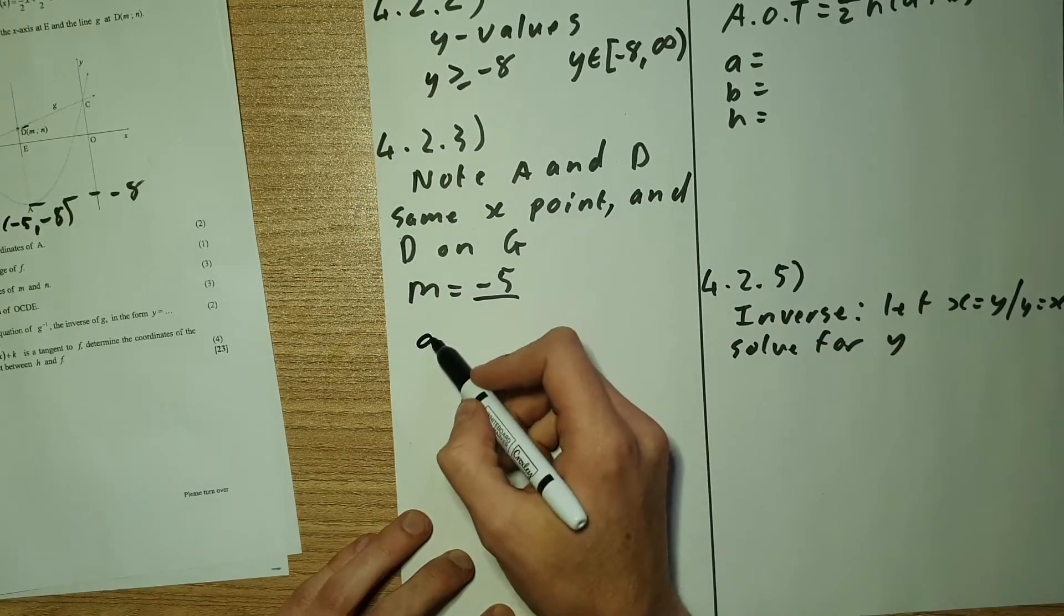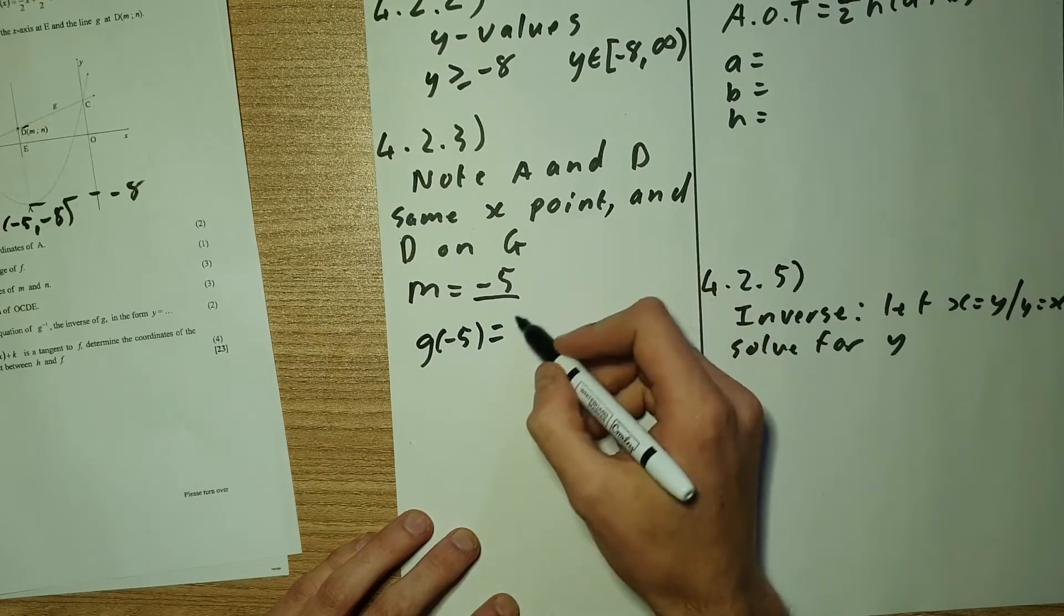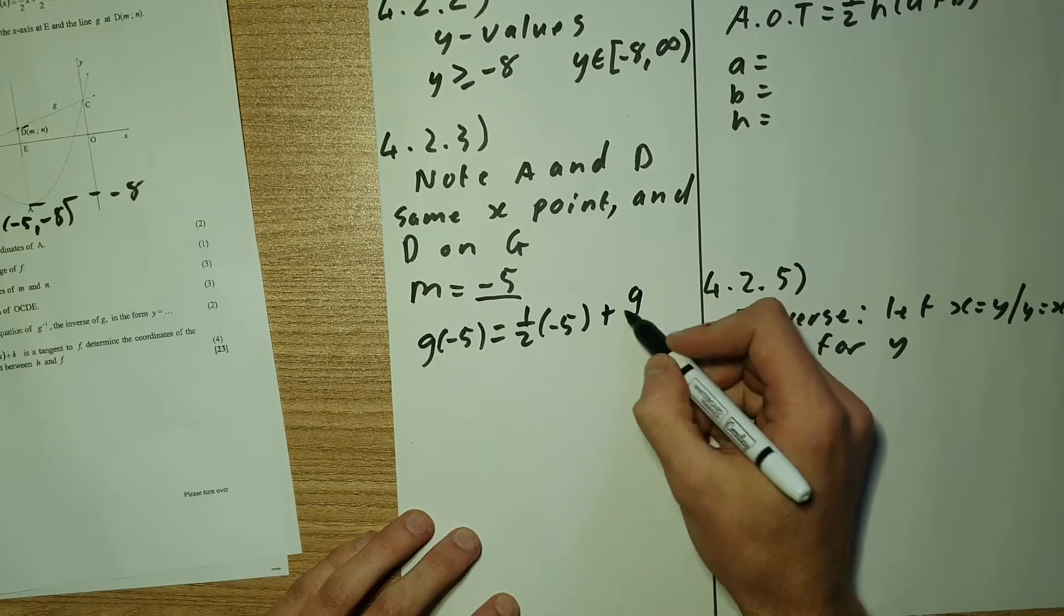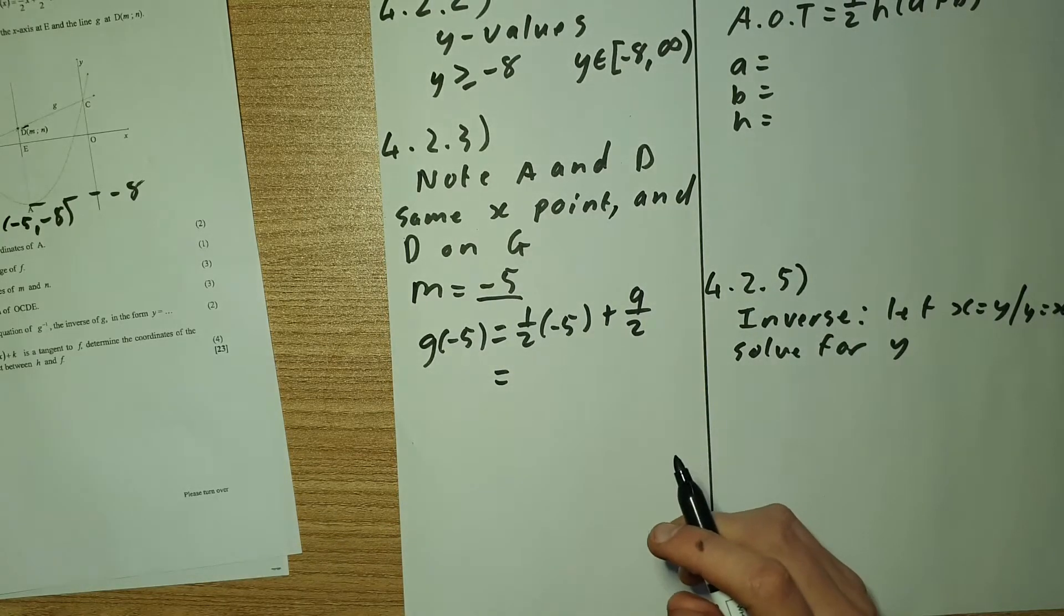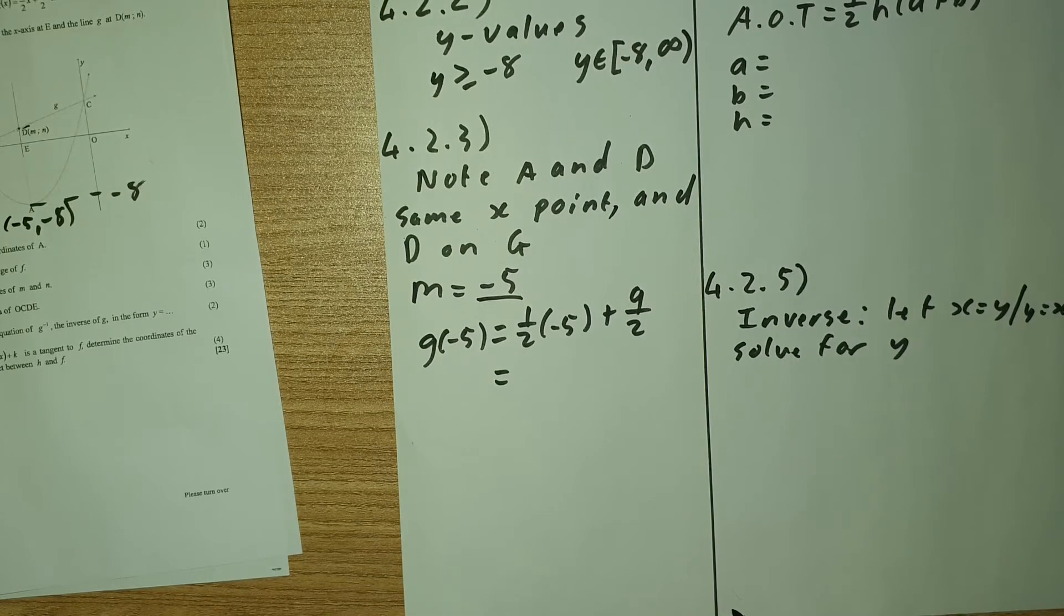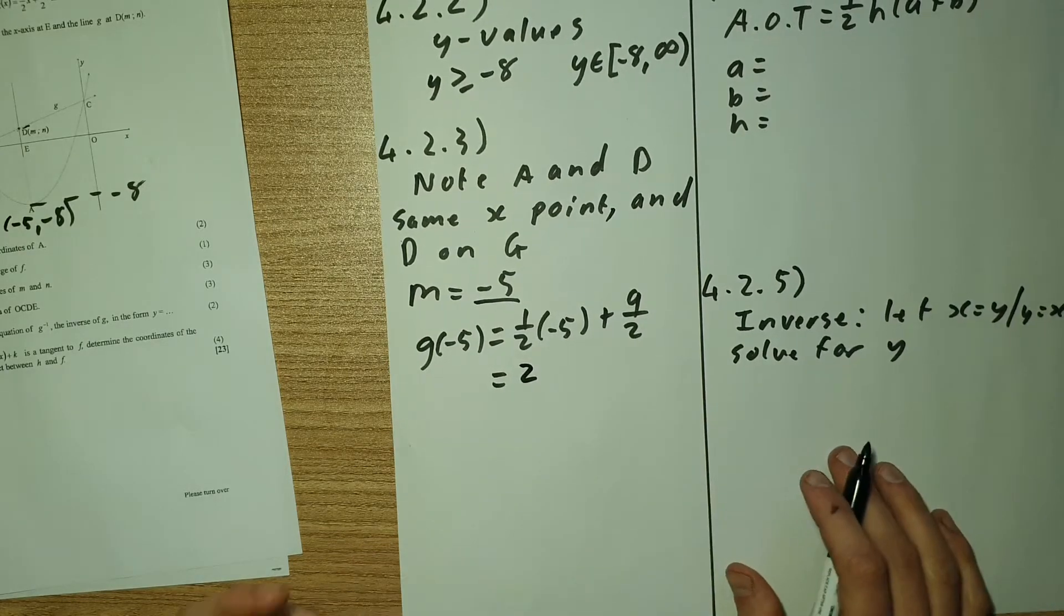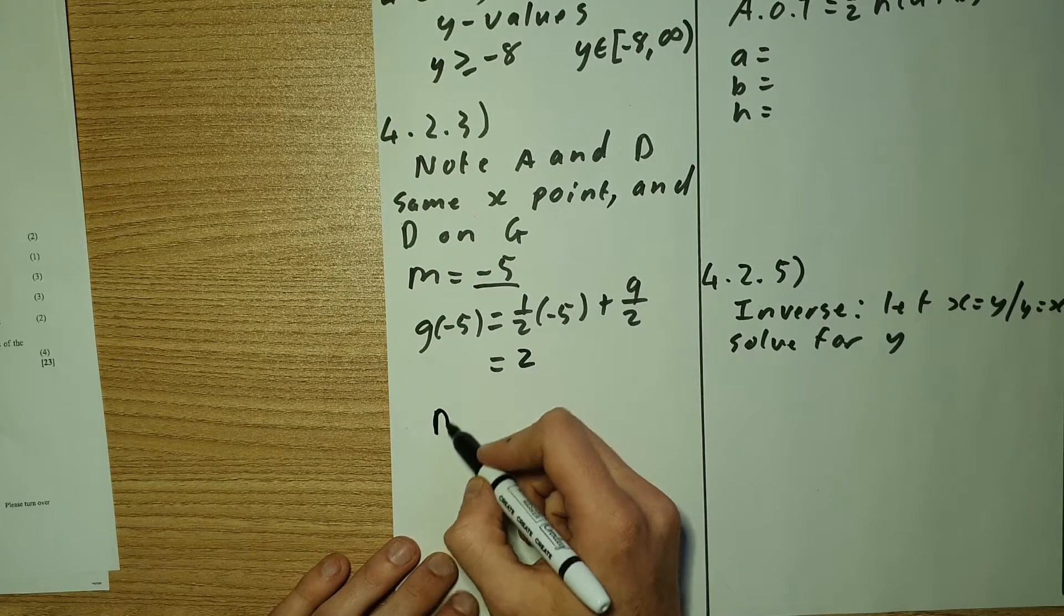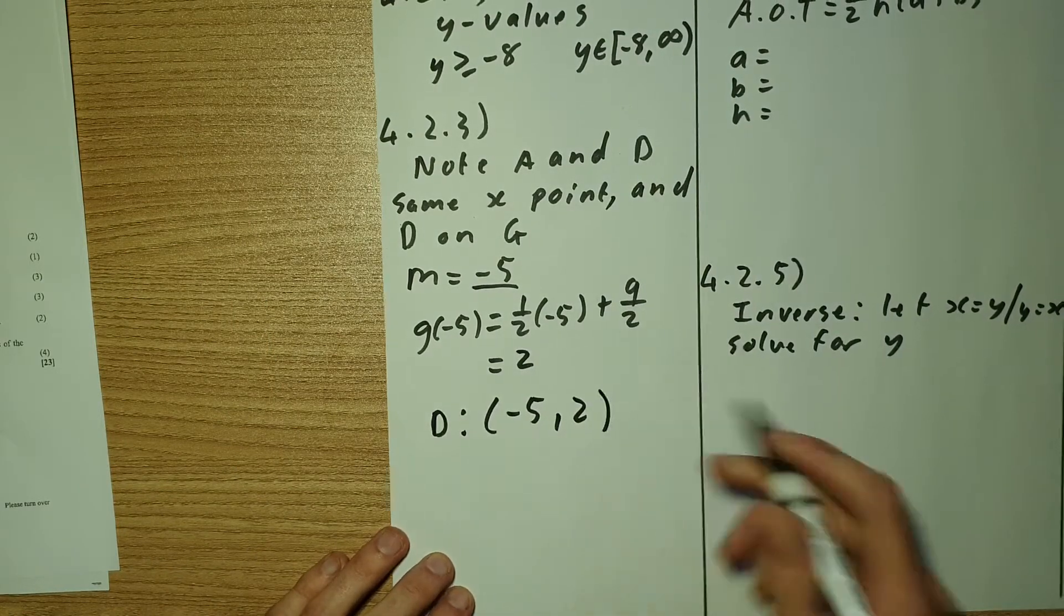So we're looking for g of negative 5, which is going to equal to a half negative 5 plus 9 over 2. And if you sort out your algebra, you should get to a value of 2. So don't forget to write the coordinate again. So therefore, d is going to be negative 5 and 2.